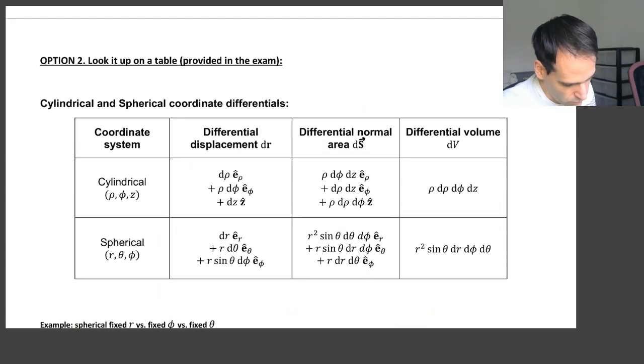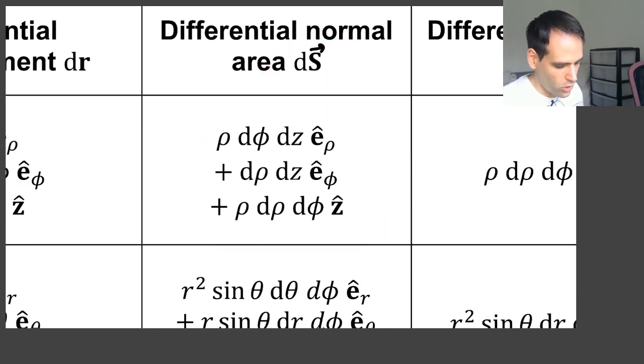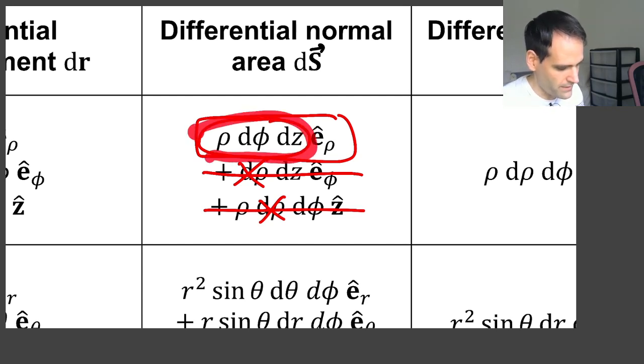you go to cylindrical coordinates. You look at dS. So we are looking here. I'm saying that we keep ρ constant. So dρ goes to 0. So we remove this and this. And we are left with this term. And we are interested in the length of this vector. So this is ρ dφ dz. Which is exactly what we found using geometrical intuition.